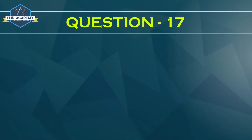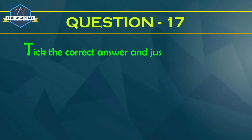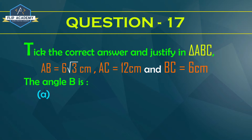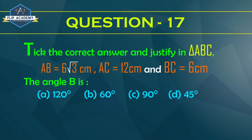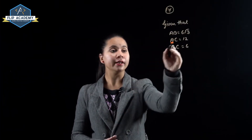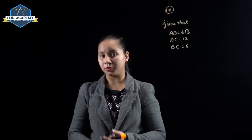Triangle exercise 6.5, question number 17. Take the correct answer and justify. In triangle ABC, AB is equal to 6√3 cm, AC is equal to 12 cm, and BC is equal to 6 cm. The angle B is: option A 120°, option B 60°, option C 90°, option D 45°. Given: AB = 6√3, AC = 12, BC = 6.